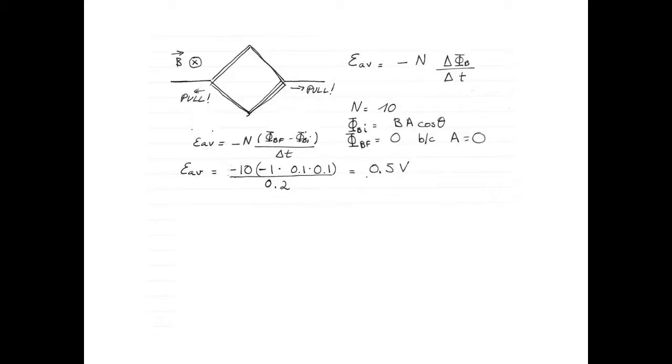The average EMF is given by minus the number of turns, that's 10, multiplied by open parenthesis 0, our final flux, minus 1, which is the magnetic field, times 0.1 meters times 0.1 meters, which is our area.